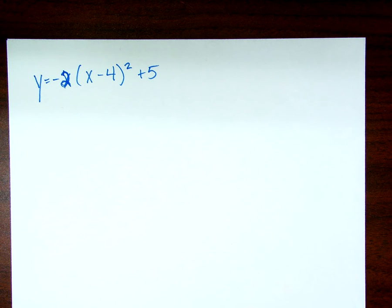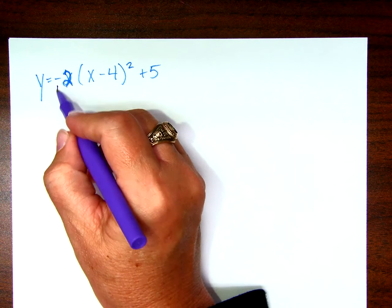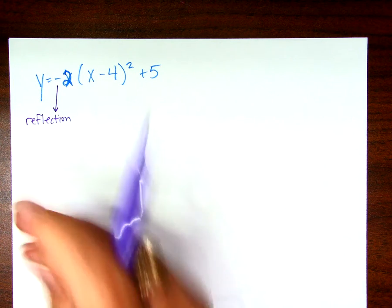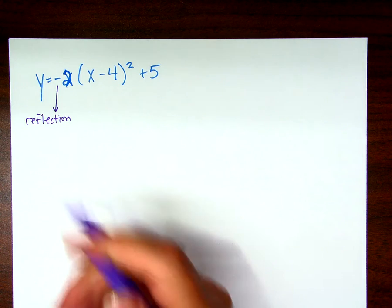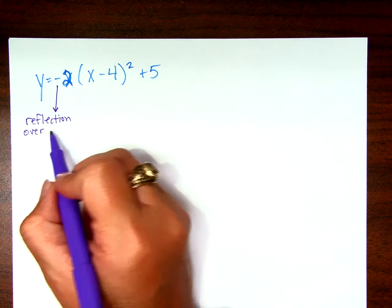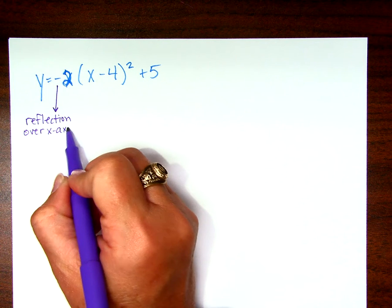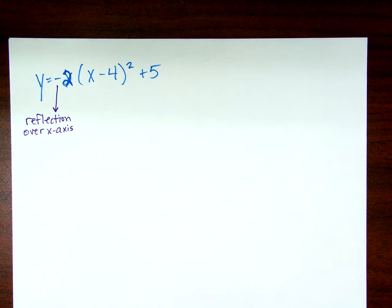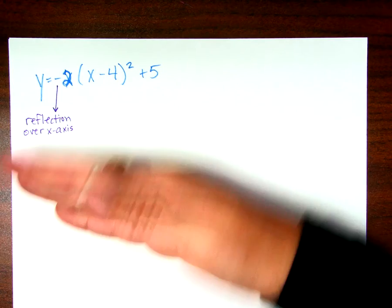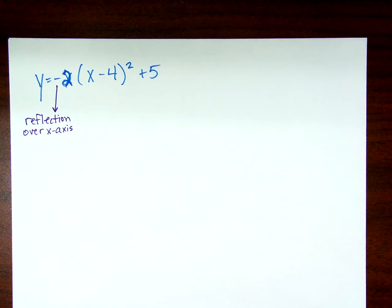So first of all it's a reflection. How do you know it's a reflection? Because of the negative on the front. So this right here causes a reflection. Do you know what type of reflection? That's a good guess. X-axis. Remember it's outside of the function so that always causes a vertical change and a vertical reflection would take place over the x-axis, right?